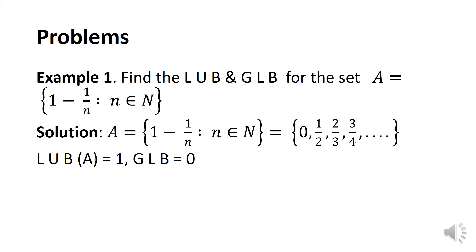So, 0 is at the start and is the greatest lower bound, and 1 is the least upper bound. Therefore, 0 is the GLB and 1 is the LUB for this problem.